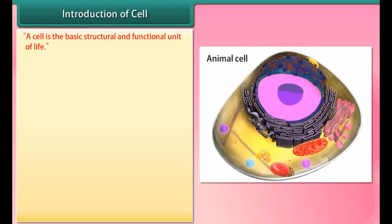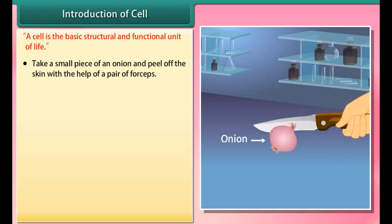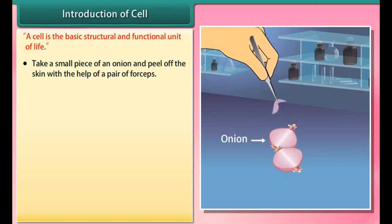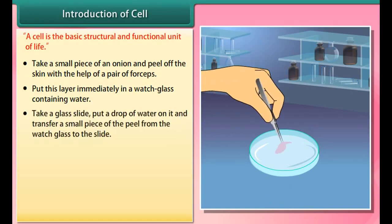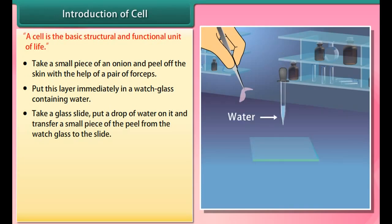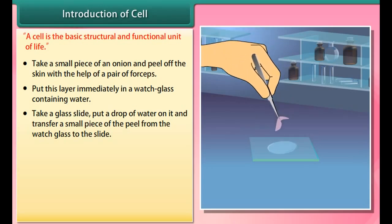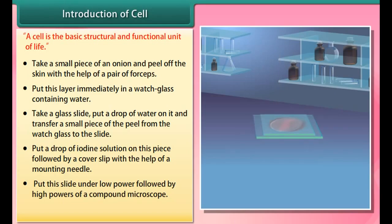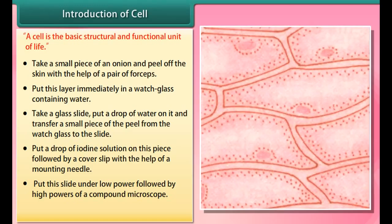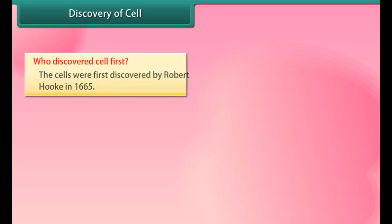A cell is the basic structural and functional unit of life. Experiment: Take a small piece of an onion and peel off the skin with the help of a pair of forceps. Put this layer immediately in a watch glass containing water. Take a glass slide, put a drop of water on it, and transfer a small piece of the peel to the slide. Put a drop of iodine solution on this piece, followed by a cover slip. Put this slide under low power, followed by high powers of a compound microscope. All these structures are similar to each other.